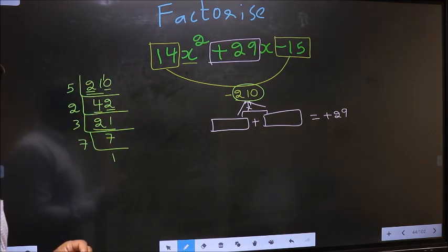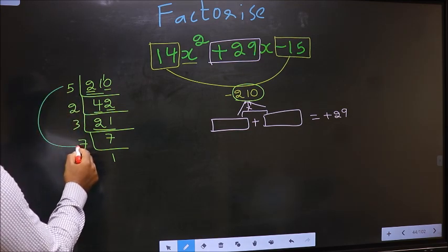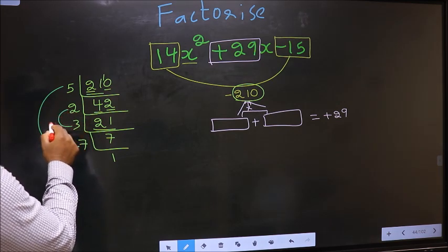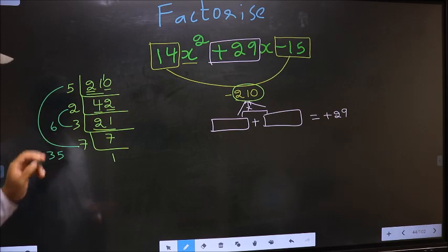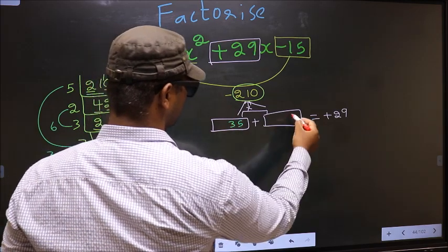Now the two numbers should be 5 × 7 = 35, and the second number is 2 × 3 = 6. 35 - 6 = 29, and 35 × 6 = 210. So here we write 35 and 6.